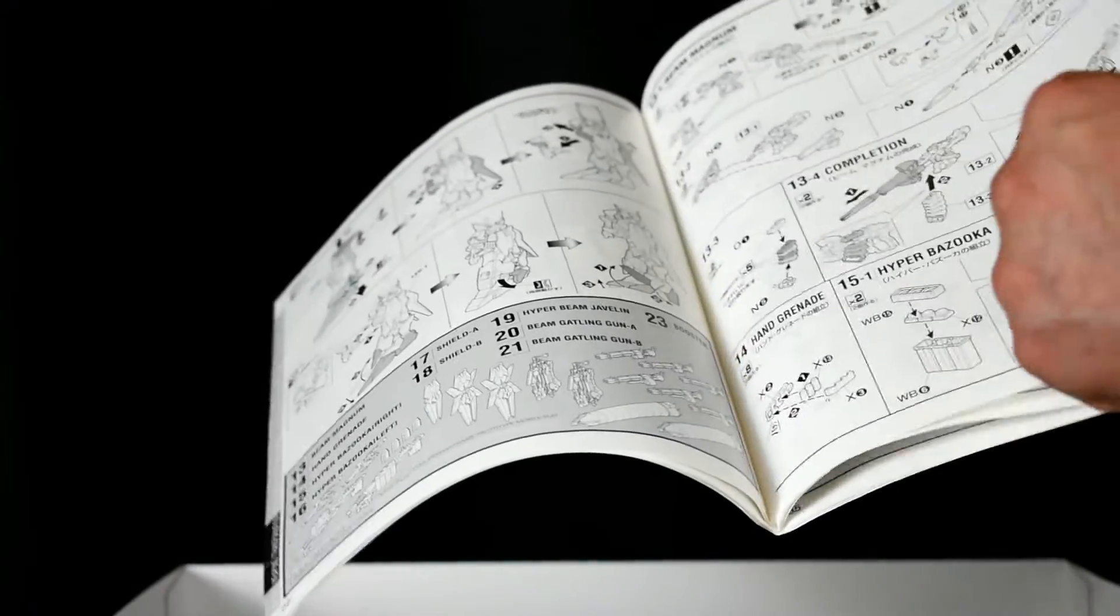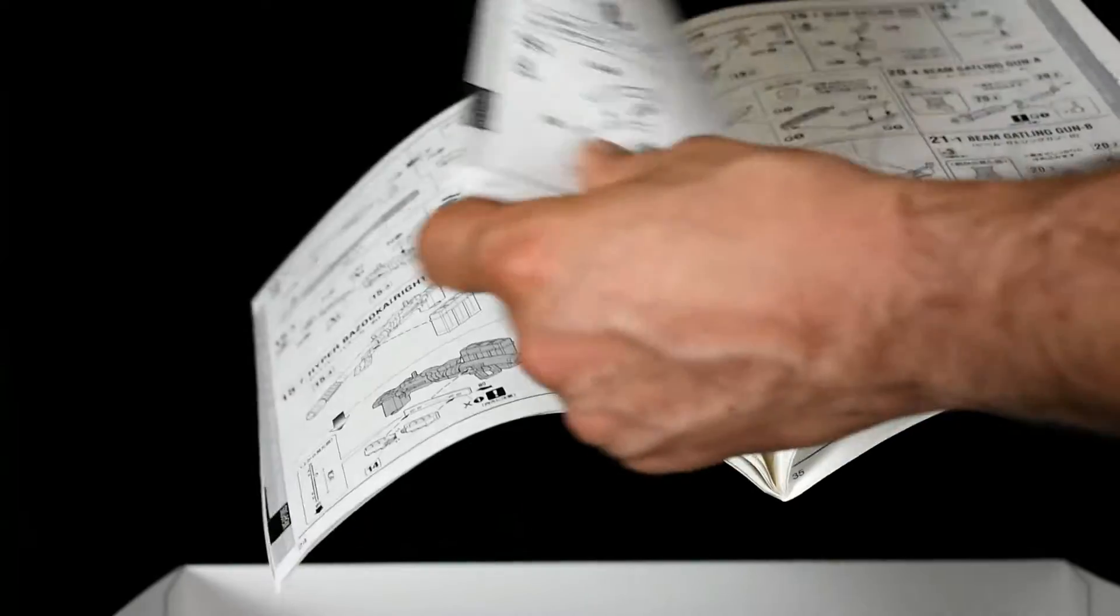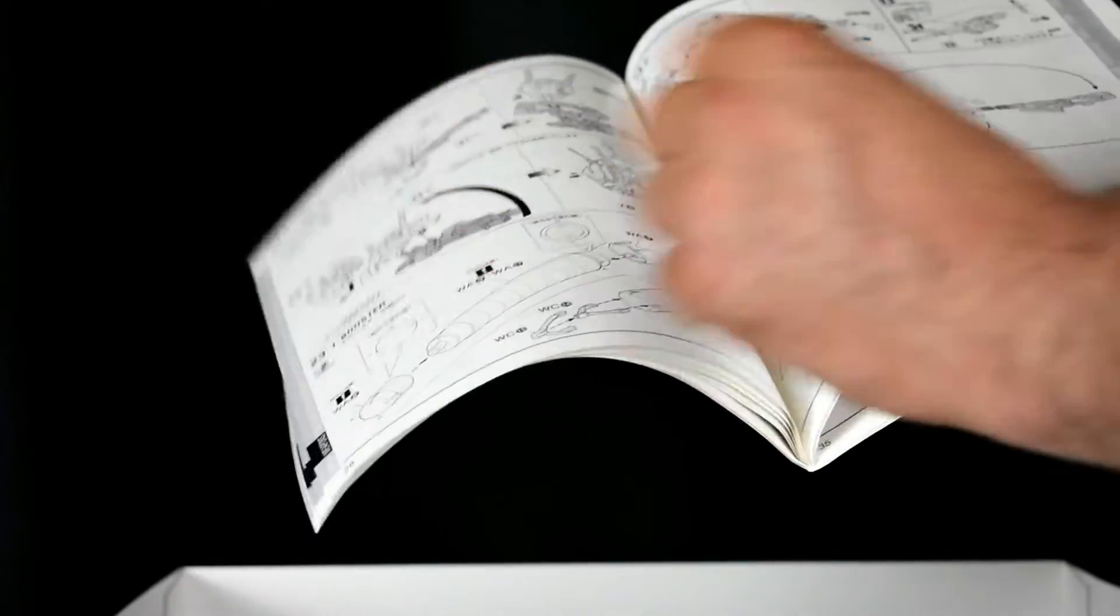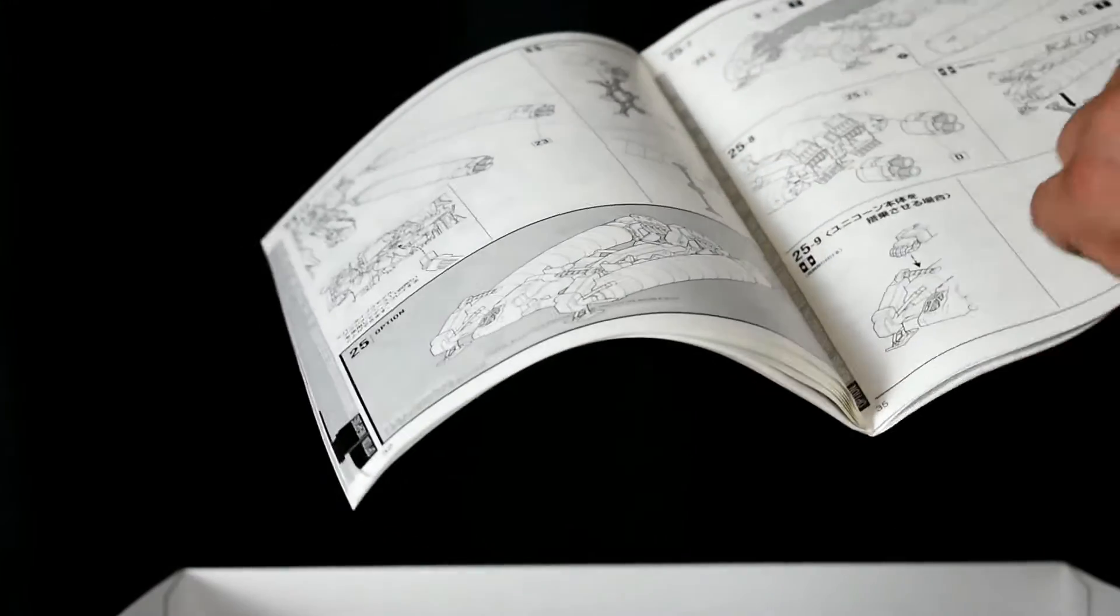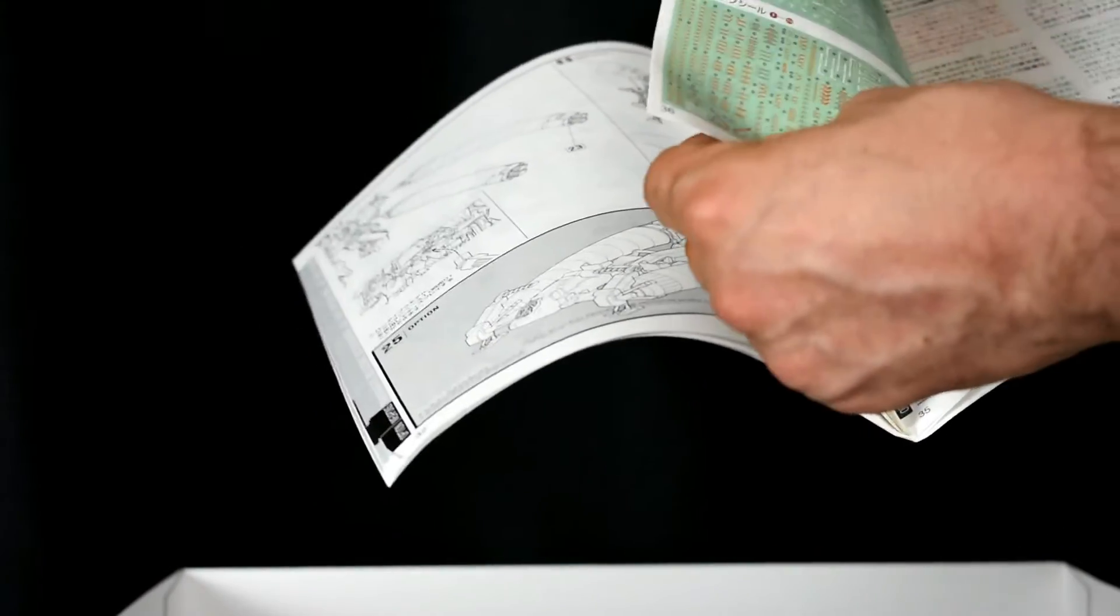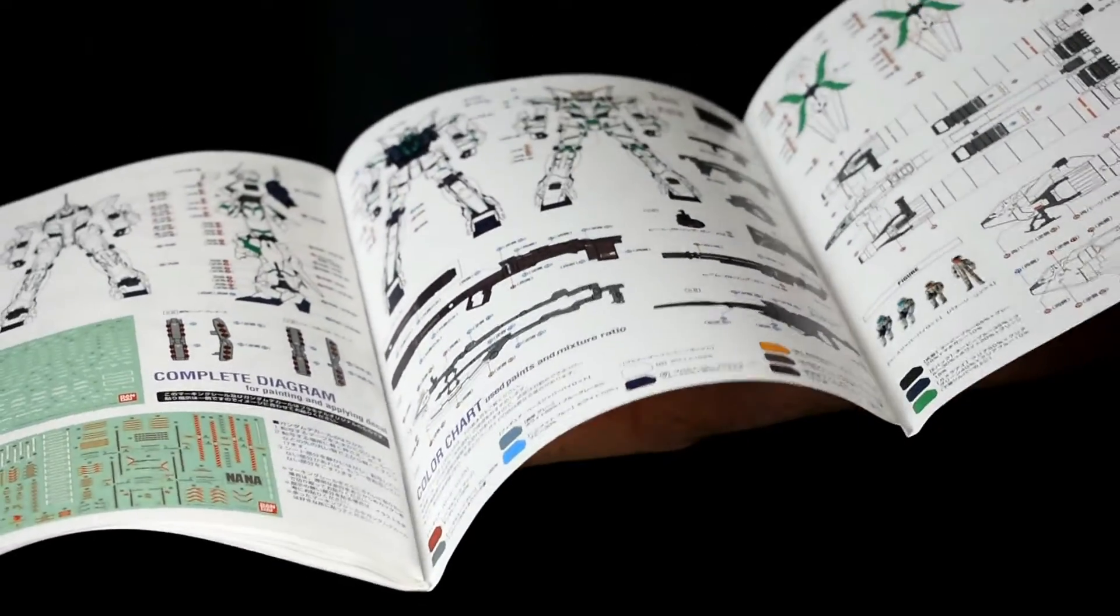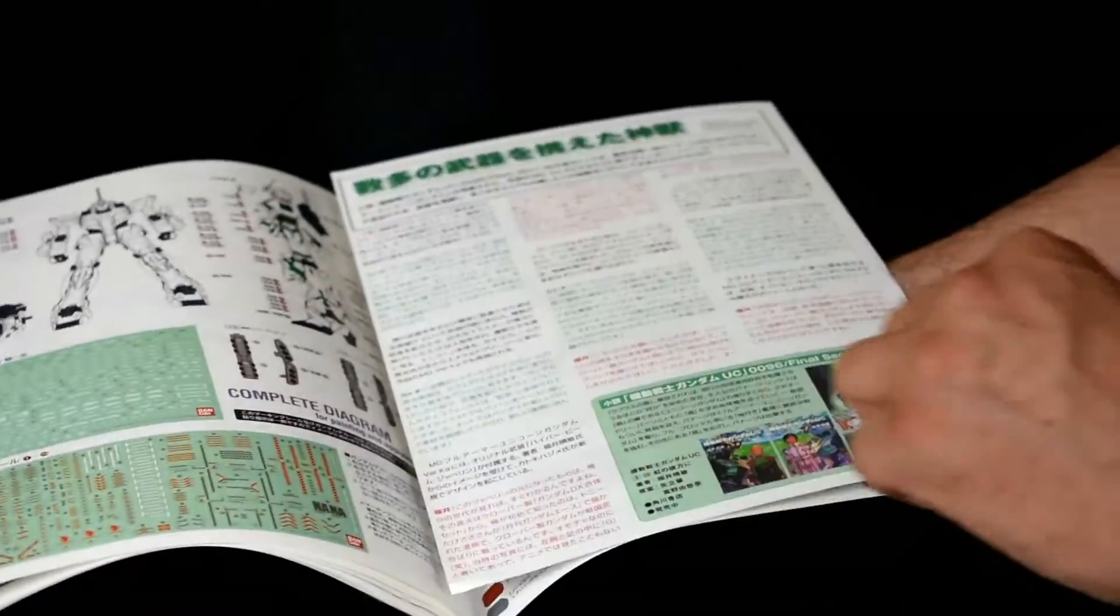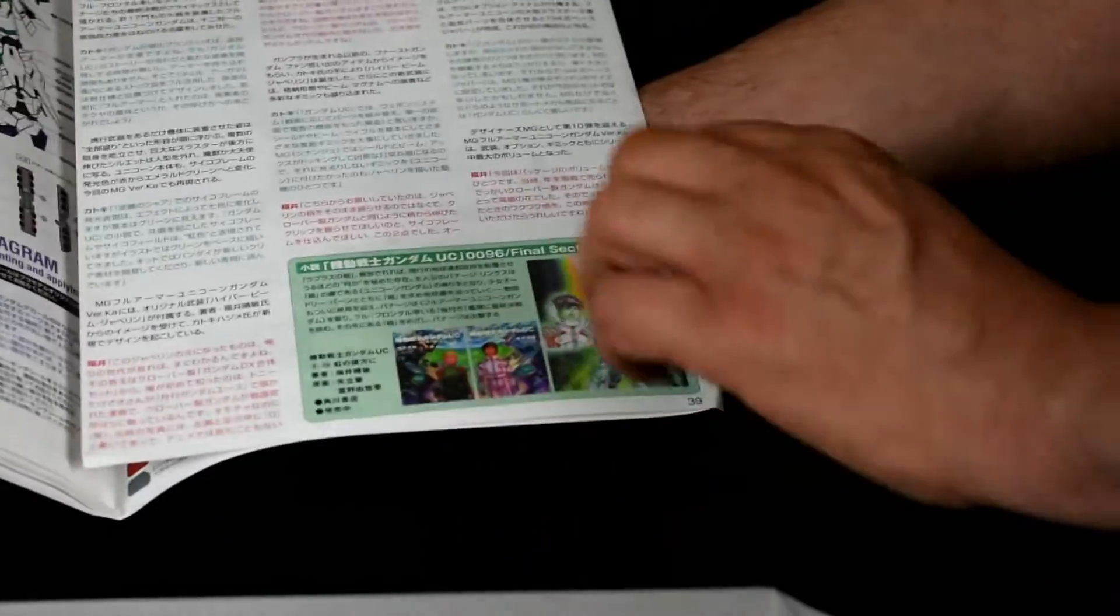And some more illustrations of what's in the novel. Your weapons, shield builds. 35 pages in total for the builds. Three pages for the decal application. Some more pictures here of the novels and what to expect inside.